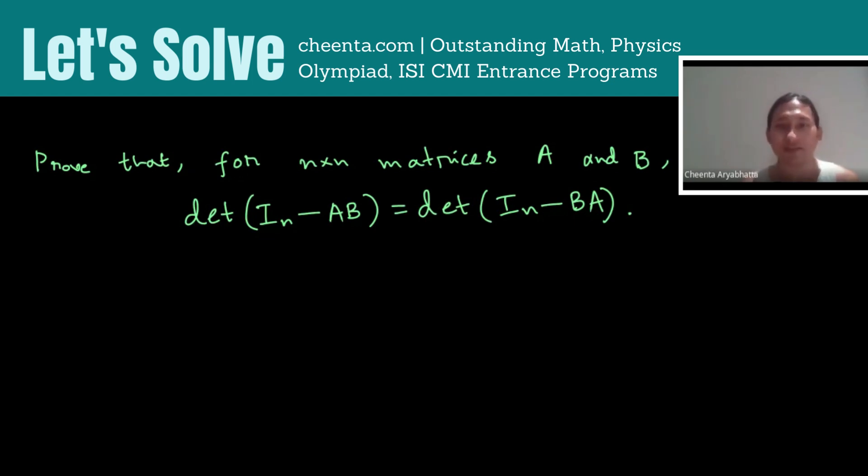Hi, welcome. Today I have a matrices problem for you, which is ISI or CMI entrance level. So the problem says prove that if you have two n cross n matrices, A and B, then the determinant of identity minus AB is equal to the determinant of identity minus BA. So IN here is the n cross n identity.